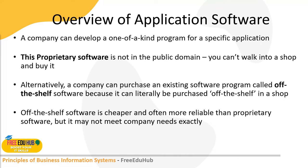Alternatively, a company can purchase an existing software program called off-the-shelf software, which can literally be purchased off the shelf in a shop and is available for everyone. These softwares are designed so that anyone in a specific kind of business can use them. For example, a logistics company can buy software specialized in that field. However, sometimes only the core functions are present and specific features the company practices may not be available. Off-the-shelf software is cheaper and often more reliable than proprietary software, but may not meet company needs exactly.